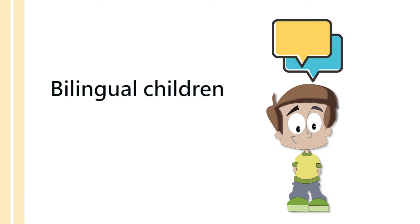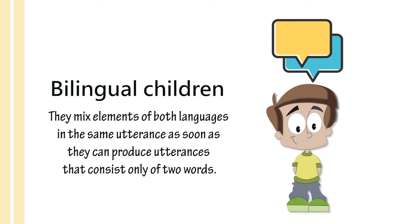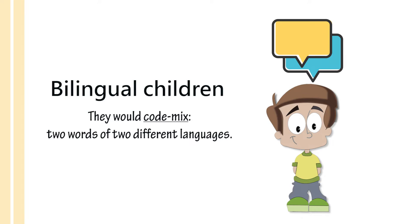According to a lot of research, bilingual children mix elements of both languages in the same utterance as soon as they can produce utterances. These utterances can be as short as two words, so bilingual children would code mix by putting two words of two different languages in the same utterance. That's how minimal code mixing can be — it doesn't have to be a paragraph or a full sentence.